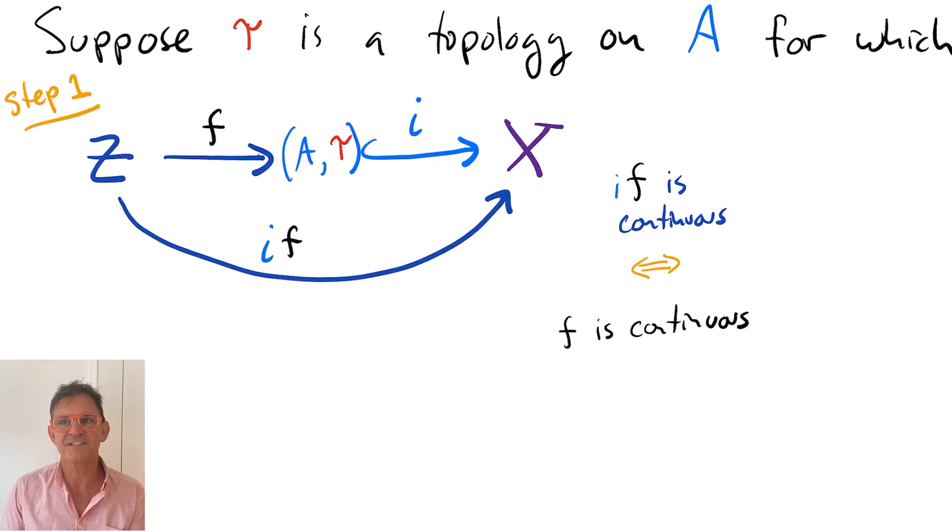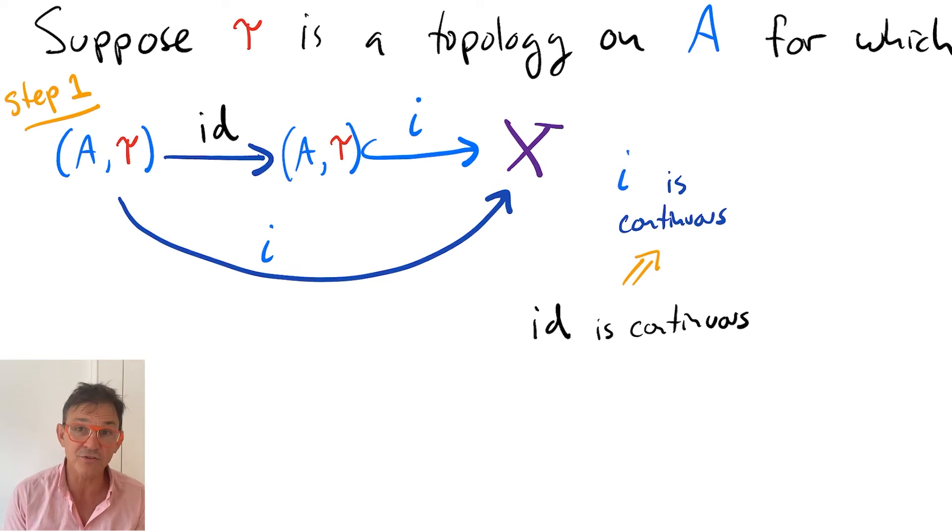The first step is to set the space Z equal to A with this topology tau and let F be the identity function. The identity function from a space to itself with the same topology is always continuous. So, the special property tells us that the inclusion into X is continuous.